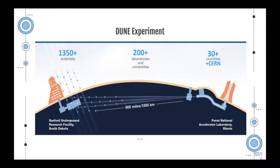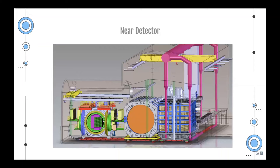As you can see here, we have pretty big sizes — this is the surface of the Earth. Basically, from Fermilab they're going to shoot a neutrino beam that will travel all the way to South Dakota, a distance of 1,300 kilometers, which is crazy. We have two detectors: a near and a far detector. In the lab, we focus mainly on the near detector.